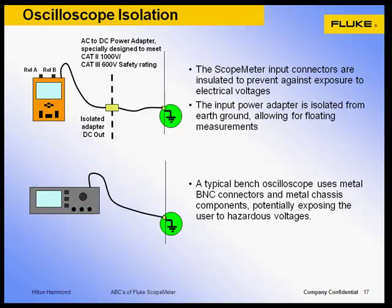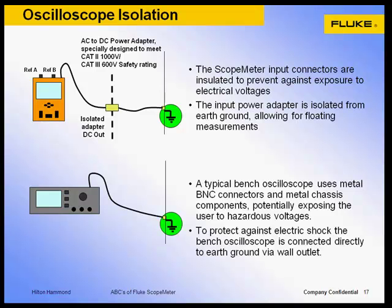A typical bench oscilloscope input reference and chassis are electrically tied to earth ground to protect against electrical shock. To be safe, all exposed metal conductors including the chassis and BNC connectors are tied to earth ground. Connecting the bench scope reference input directly to anything other than earth ground can present an unsafe hazardous condition to the user.